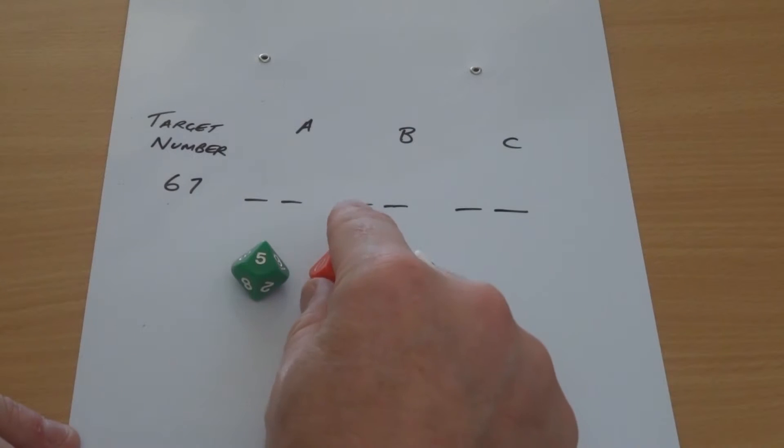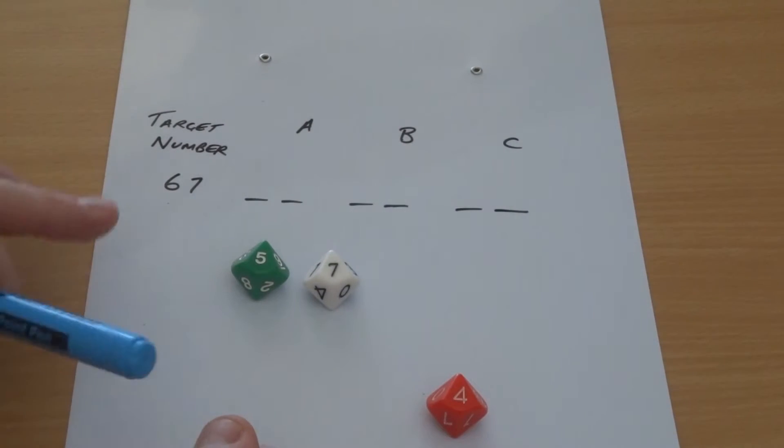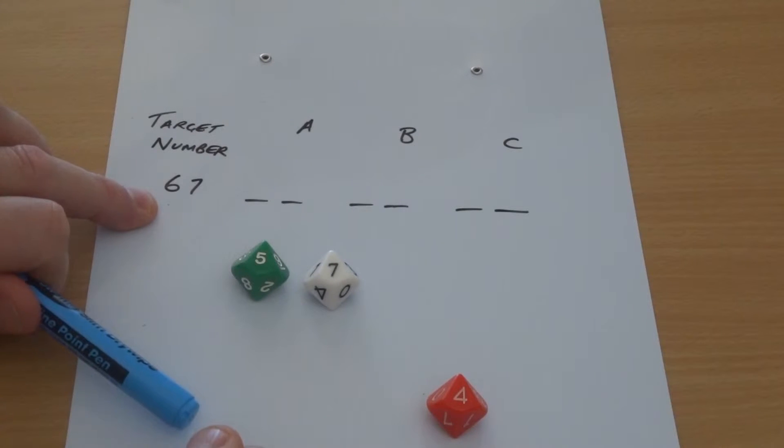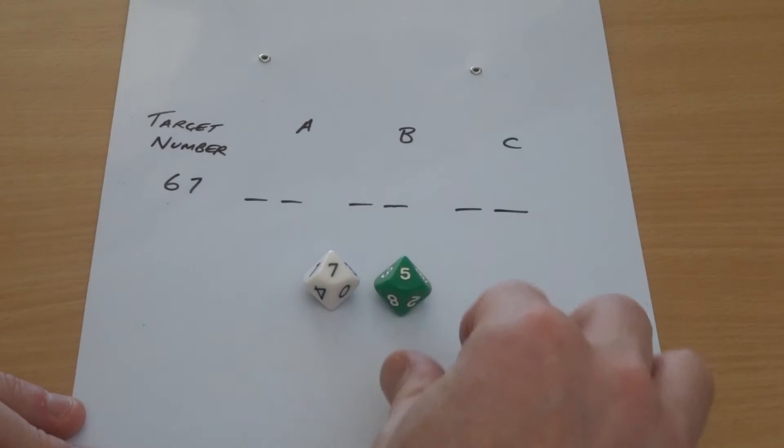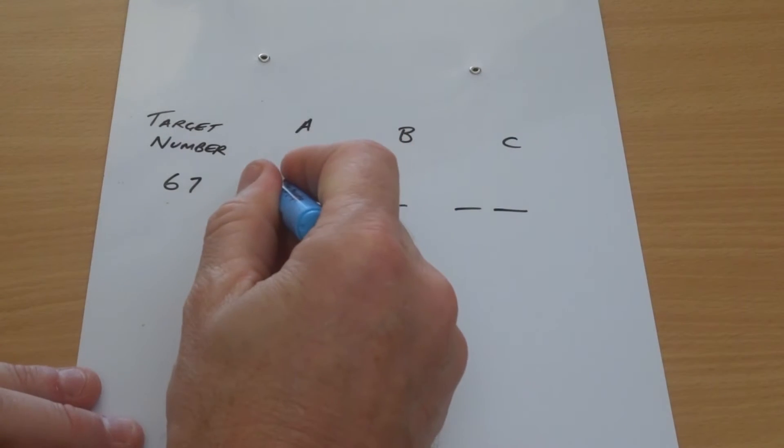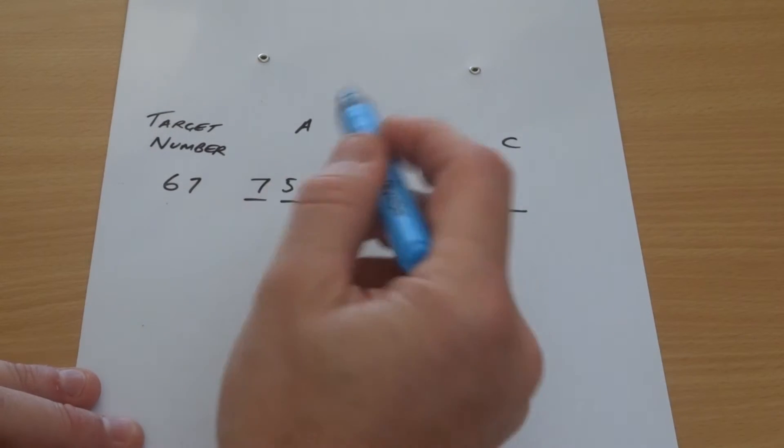For example, in this case someone might decide to make 57, and that's 10 away from 67. But in fact the better choice would be to make the number 75, because that's only eight away. So if that was my shot, I would put 75 in here and I'm eight points away.